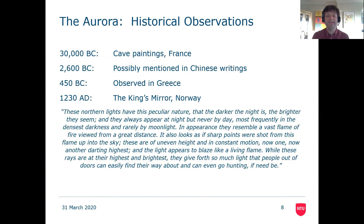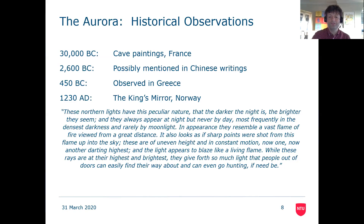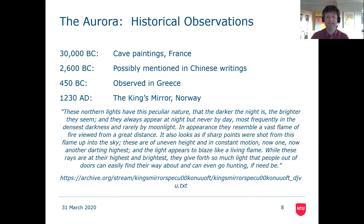It says: 'These Northern Lights have this peculiar nature — the darker the night is, the brighter they seem. They always appear at night but never by day, most frequently in the densest darkness and rarely by moonlight. In appearance they resemble a vast flame of fire viewed from a great distance. It also looks as if sharp points were shot from this flame up into the sky. These are of an even height and are in constant motion — now one, now another darting highest — and the light appears to blaze like a living flame. While these rays are the highest and brightest, they give forth so much light that people out of doors can easily find their way about and can even go hunting if need be.' And the description goes on further — if you want to read it in detail, have a look at this link here. It's a wonderful description of when the Northern Lights appear and what they look like and how they change.